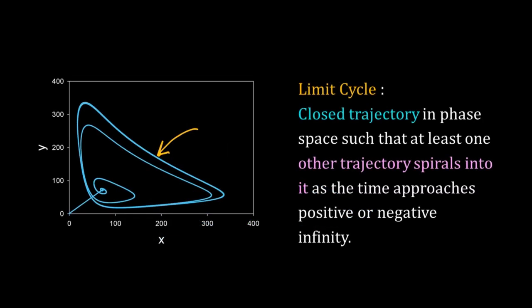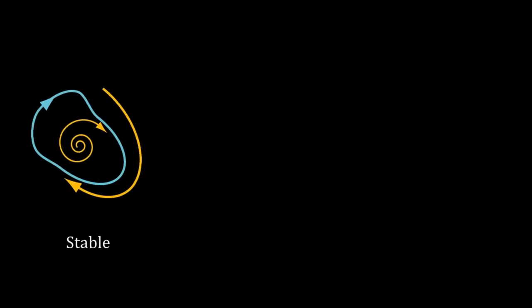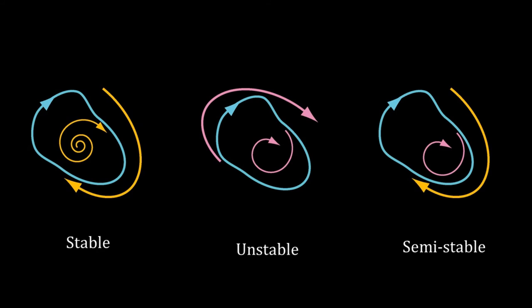A limit cycle is a closed trajectory in the phase space such that at least one other trajectory spirals into it as time approaches positive or negative infinity. Like a steady state, a limit cycle can be stable. For a stable limit cycle, all the neighboring trajectories approach the limit cycle with time. Similarly, we have unstable limit cycle and semi-stable limit cycle. Our repressilator has stable limit cycle.